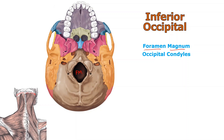On either side of the foramen magnum, I'll mark OC for occipital condyles — these lumpy things at the base of the skull. When you see the word condyle, it will always tell you that it articulates with another bone. The only bone that could articulate here is one of the vertebral bones, specifically C1, the first cervical vertebra. This is honestly the only place in the skull where a bony process touches another bone — the occipital condyles articulating with the vertebral column.